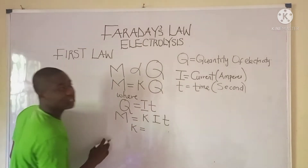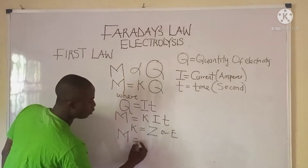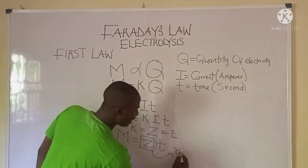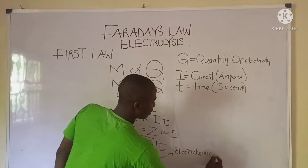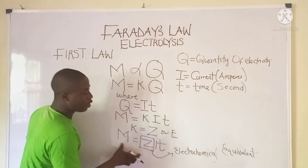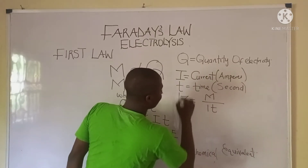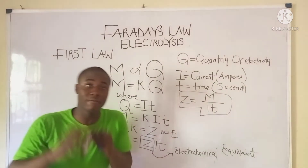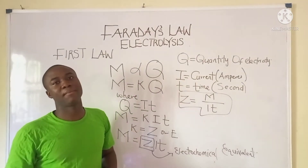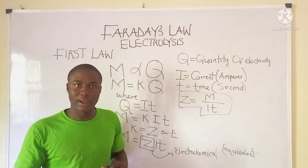The symbol k can be changed to z or e, so the formula becomes m = zIt. Z is called the electrochemical equivalent. Making z the subject of the formula gives z = m / (It). This is the key formula for solving problems on Faraday's first law of electrolysis.